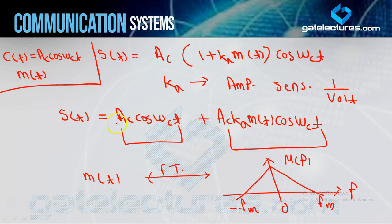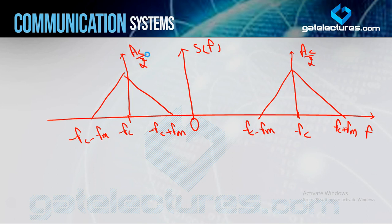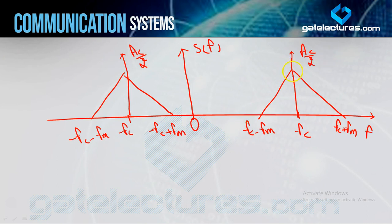Now for the first term AC cos(ωC t): as I told in the last video, if cos has only an amplitude, it creates impulses — one at +FC and one at −FC, both with amplitude AC/2. The triangular peak amplitude after shifting becomes AC kA / 2, so each impulse here is AC kA / 2.